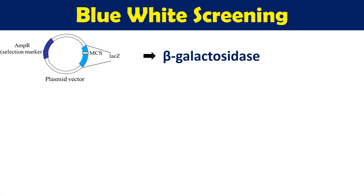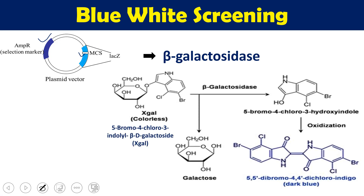In our previous video when we were talking about blue-white screening, we saw that in the case of plasmids we have two types of markers: one is antibiotic resistance marker and another one is the lac-Z gene. This lac-Z gene normally produces beta-galactosidase enzyme, which metabolizes X-gal. X-gal is a chemical whose full name is 5-bromo-4-chloro-3-indolyl-beta-D-galactoside.